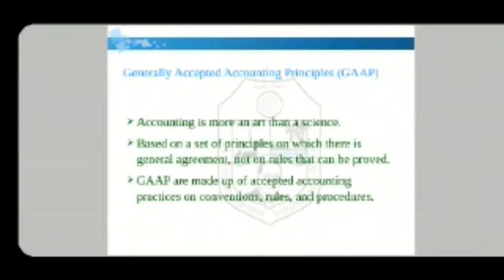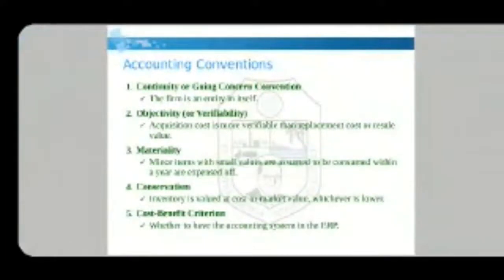There are a few accounting conventions. The first is the continuity or going concern convention. This means that whenever we are doing accounting of any firm or entity, we will continue to do so until and unless that firm exists. There are many reasons a firm or organization may vanish, but until and unless it exists, we have to do its accounting.